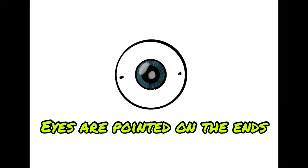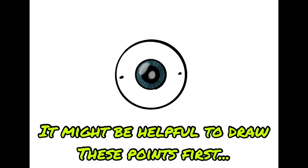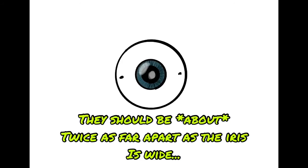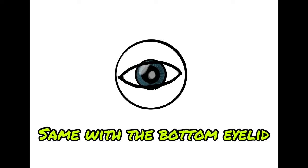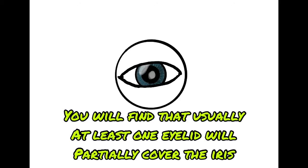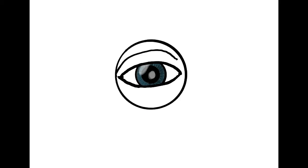Eyes are pointed on the ends. It might be helpful to draw these points first. They should be about twice as far apart as the iris is wide. The top of the eyelid curves over the eyeball from point to point. Same with the bottom eyelid. You will find that usually at least one eyelid will partially cover the iris.